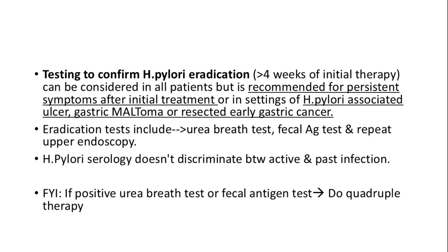Testing to confirm H. pylori eradication, done more than 4 weeks after initial therapy, is especially recommended in patients with persistent symptoms, a history of H. pylori-associated ulcers, gastric MALT lymphoma, or resected early gastric cancer. Eradication is usually checked with a urea breath test, fecal antigen test, or sometimes repeat endoscopy.